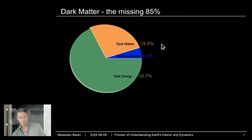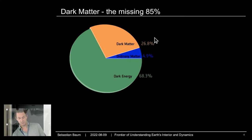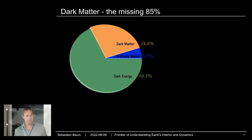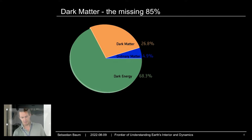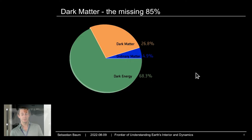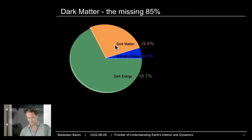However, 27% of the energy budget of the universe is made up of some mysterious substance we call dark matter — a substance that interacts gravitationally just like ordinary matter, but otherwise we don't know what it does; we have not seen its effects in any other way. Then there's 70% we call dark energy, the cause of the accelerated expansion of the universe. I'm going to focus on dark matter.